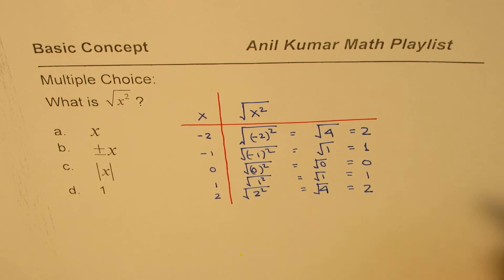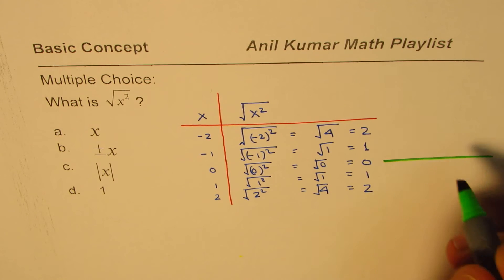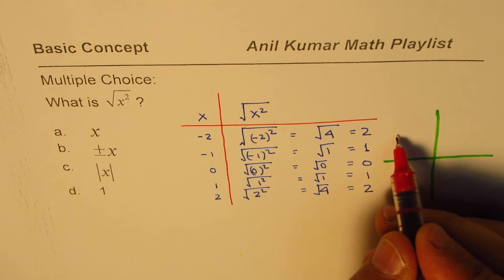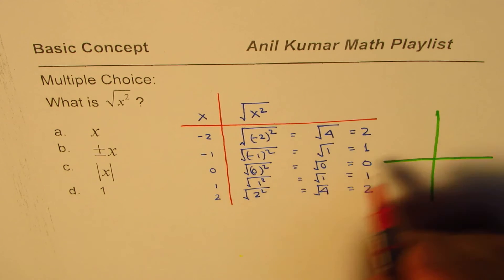So what do you get here? Well, if I graph it, the solution will be absolutely clear. So for minus 2, it is 2. What do you see for these values?